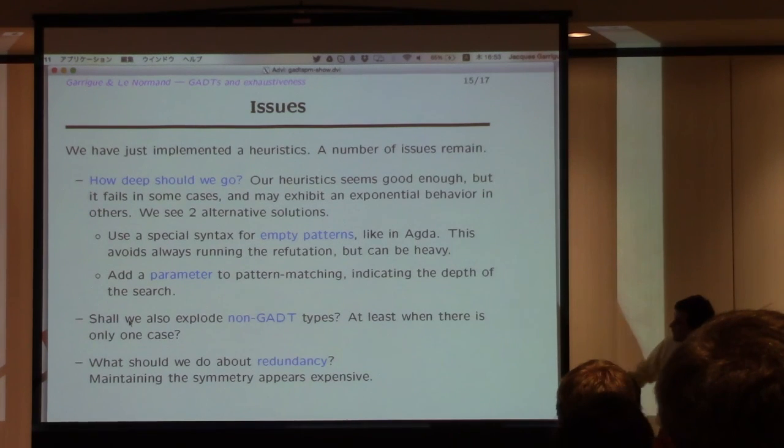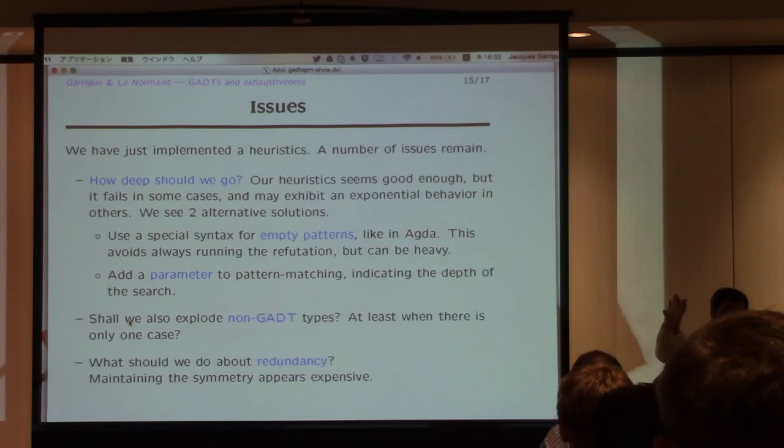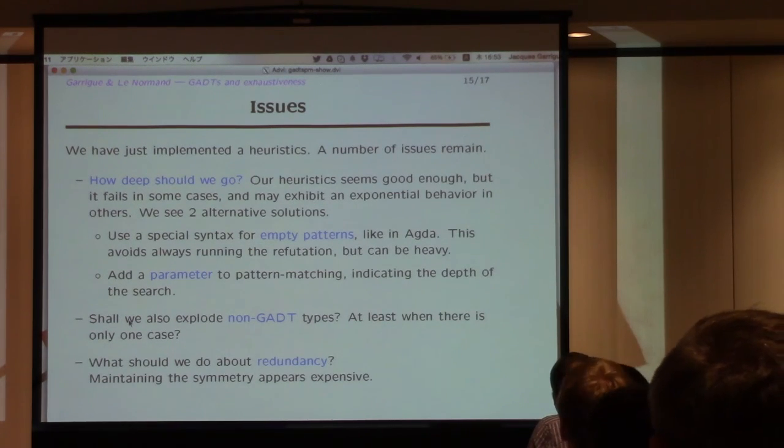Another question is should we also explode non-GADT types? In particular tuples, currently I don't do that, but if you have only one case, maybe it makes sense to try to get deeper, because there could be a GADT behind there. So these are things like that. And also, do we really have to try as hard on redundancy, because redundancy can be rather expensive?